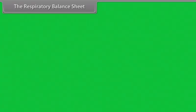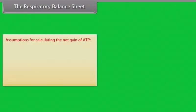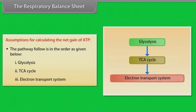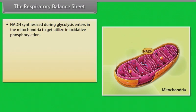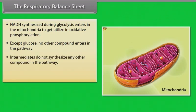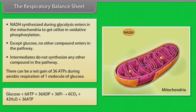The respiratory balance sheet: By using the respiratory balance sheet, we can calculate the net gain of ATP for each molecule of glucose oxidized. The pathway followed is glycolysis, TCA cycle, and electron transport system. NADH synthesized during glycolysis enters the mitochondria for oxidative phosphorylation. There can be a net gain of 36 ATPs during aerobic respiration of one molecule of glucose: glucose + 6O₂ + 36 ADP + 36 Pi → 6CO₂ + 42H₂O + 36 ATP.